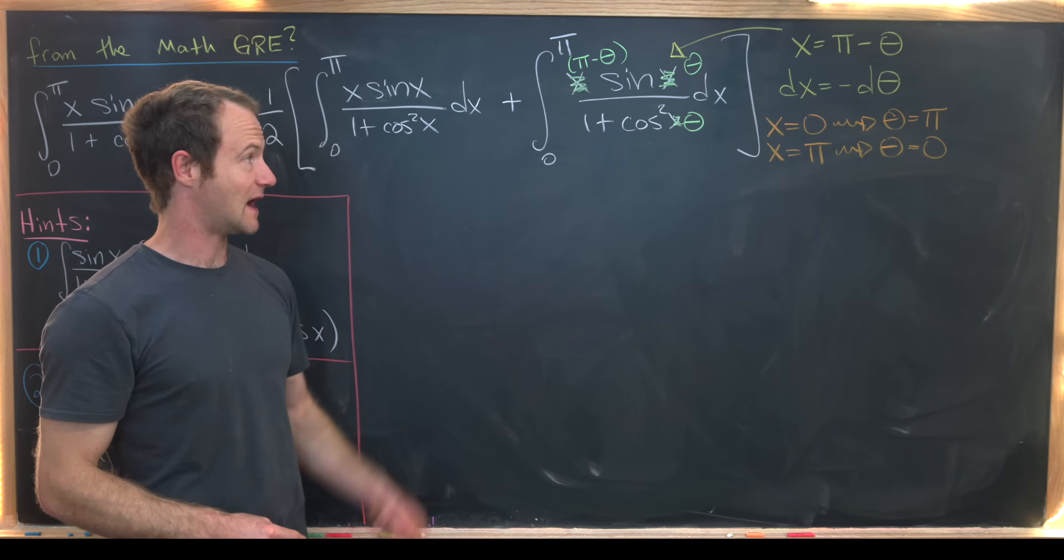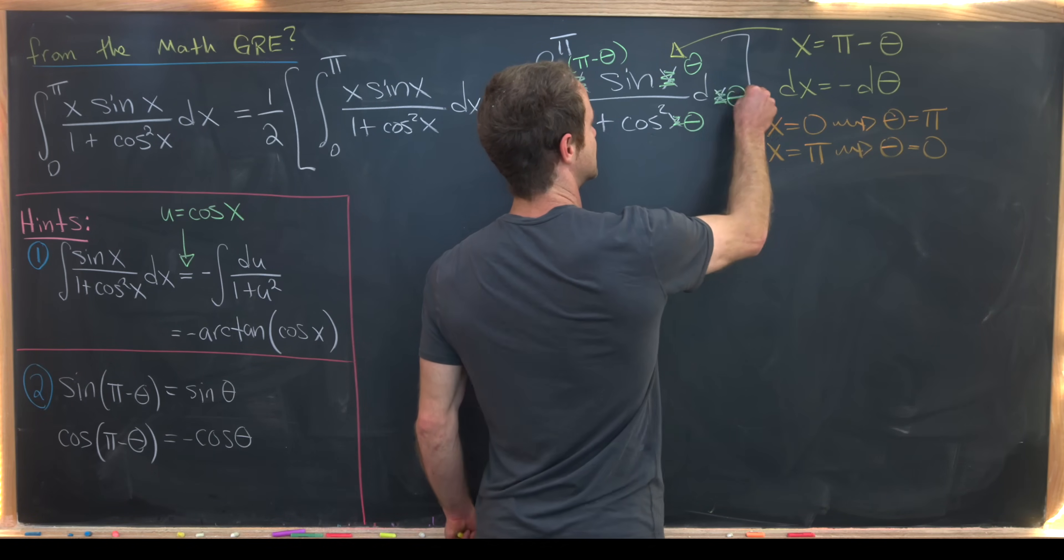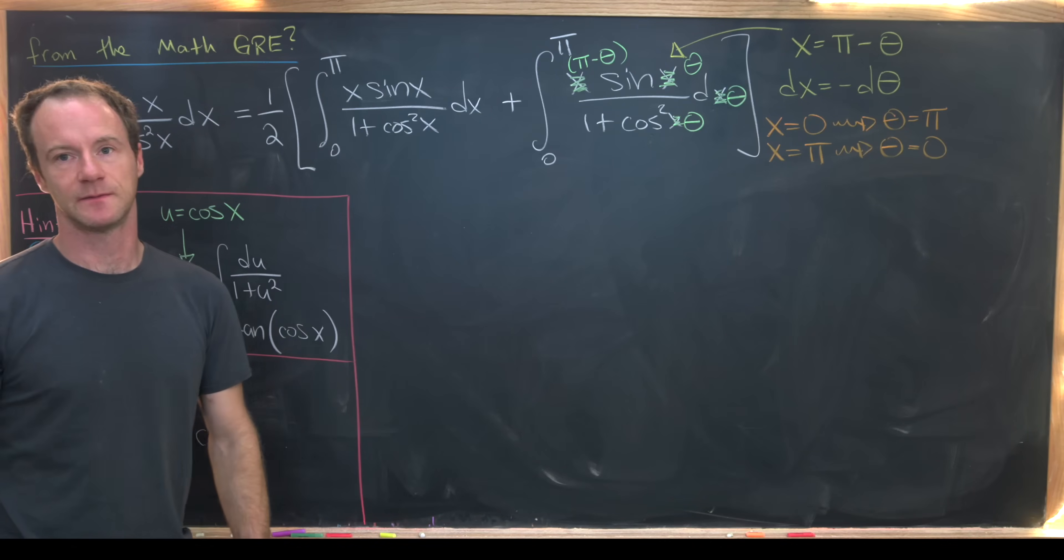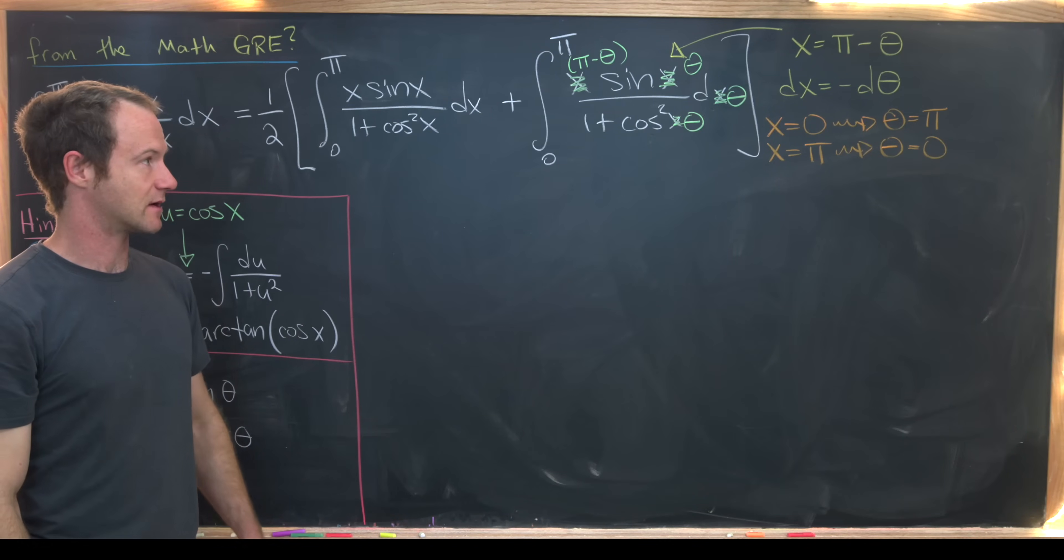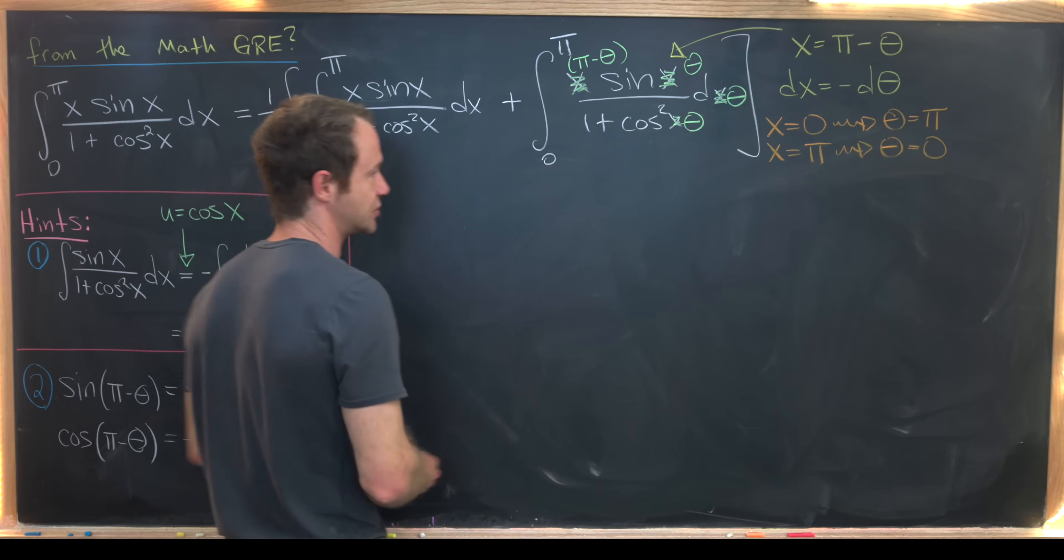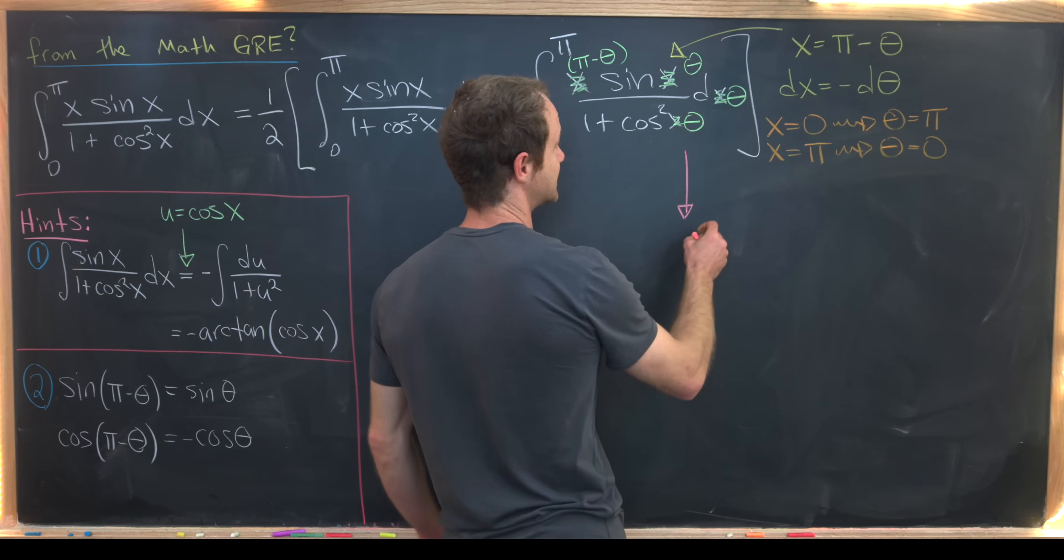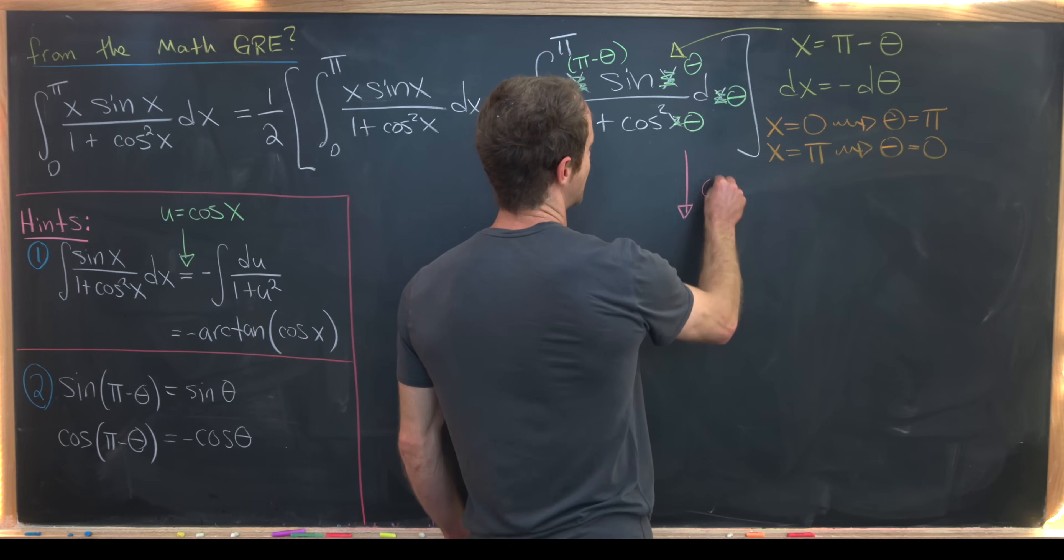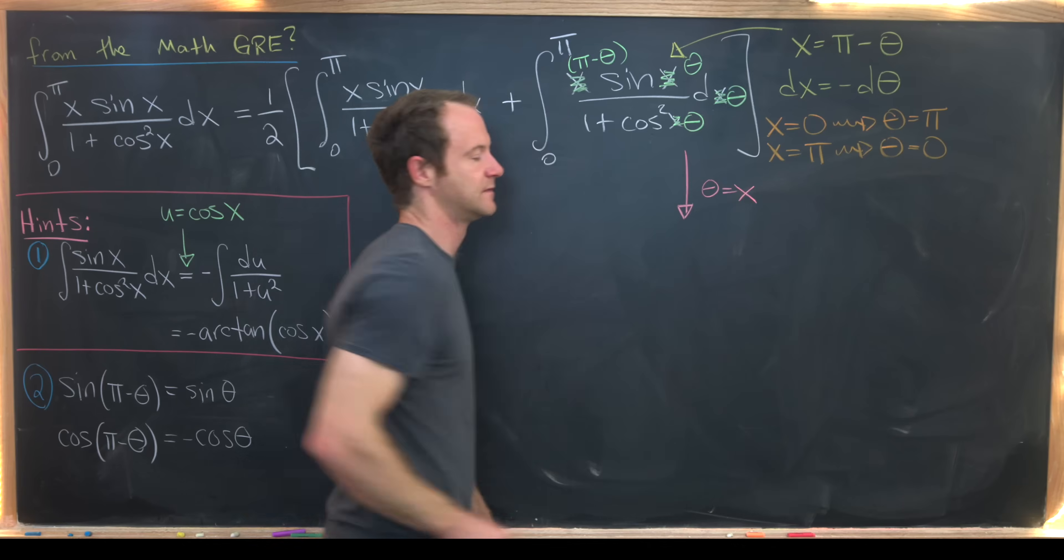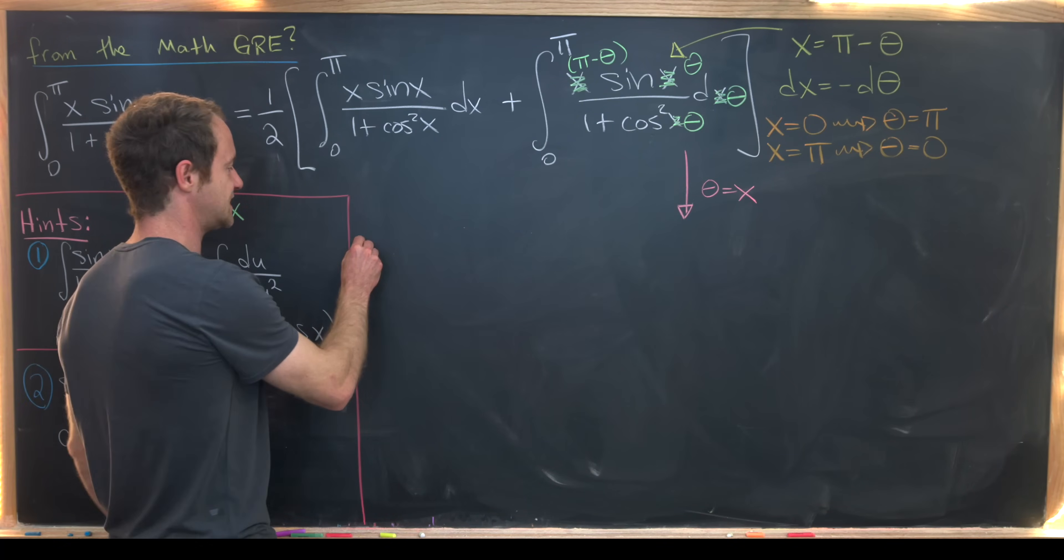So that means I can change this to d theta. Again, I've canceled out a minus sign there. Now I want to make a trivial substitution. And the trivial substitution I'll do here is to substitute back theta equals x. Now, if you're uncomfortable with that, you could use another dummy variable, but I'm just going to stick with x.